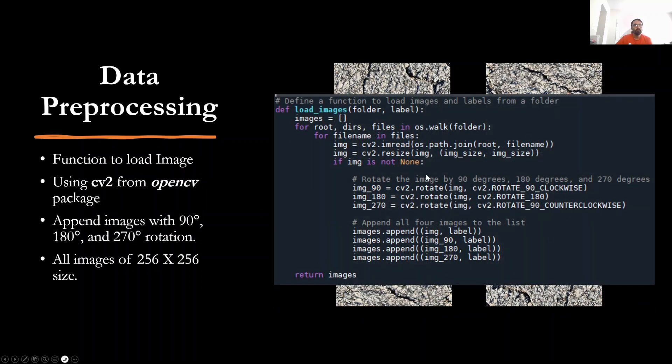So this is basically the code of what I just talked about. I'm looking into the folder for the images here, and then I'm rotating the images by 90 degrees, 180 degrees, and 270 degrees, which basically is 90 degrees counterclockwise. And I'm appending those images as a separate image file so that I have more number of images in my database.